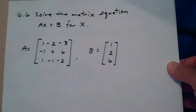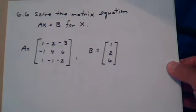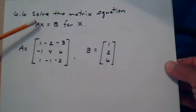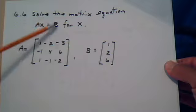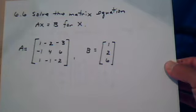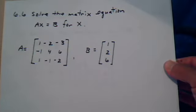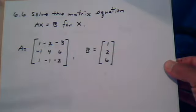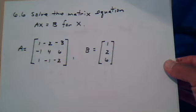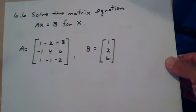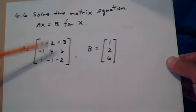We need to solve the matrix equation ax equals b for x. These are matrices, not real numbers. If these were real numbers we would just divide by a, as long as a is not zero. But these are matrices, so we have to go about it a different way — we still have to cancel this a, but we can't cancel it by dividing since there's no matrix division.